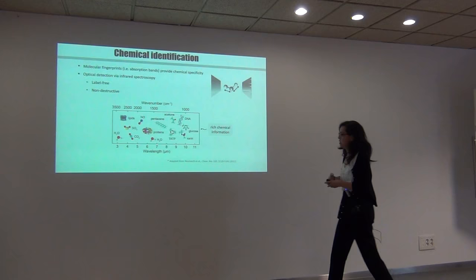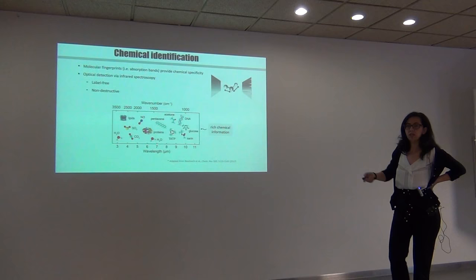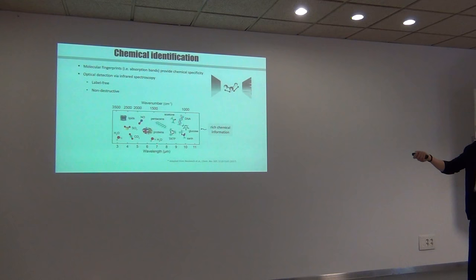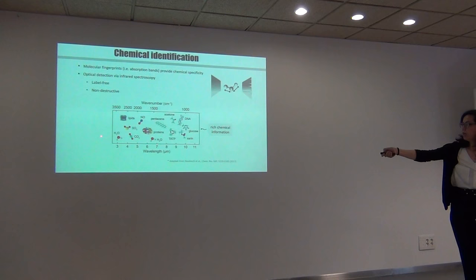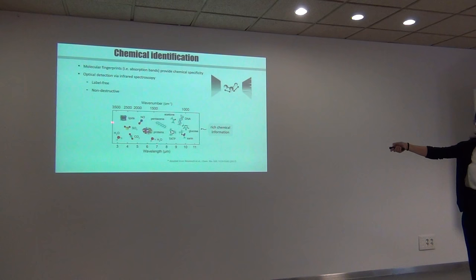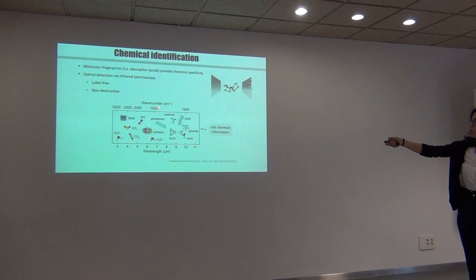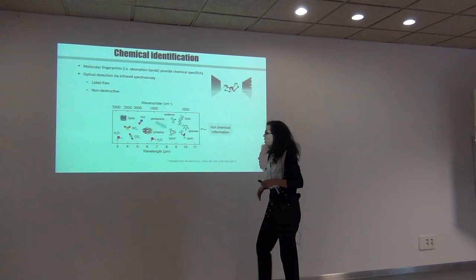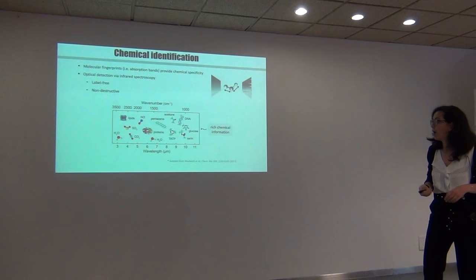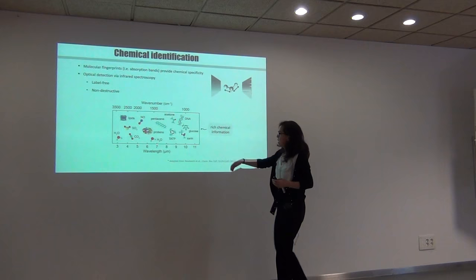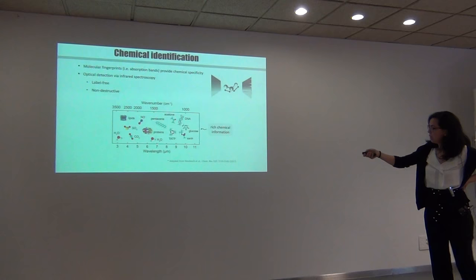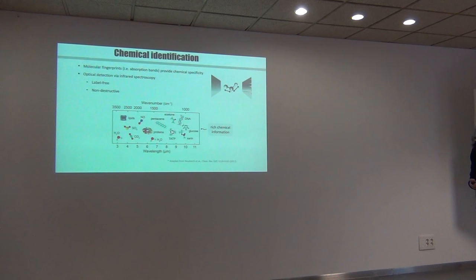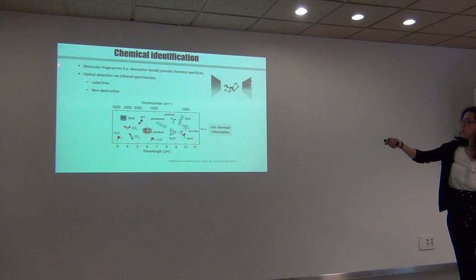In terms of wavelengths for photonics people, and wave numbers for spectroscopists, in the mid-IR range we look at direct absorption bands of molecules, mostly within the 3 to 10 micron range, corresponding to roughly 700 to 4,000 inverse wave numbers. The signatures of proteins happen to lie around 6 micron, DNA around 9 to 10 micron, and lipid has strong bands around 3 to 4 micron. There are also other chemicals of interest for explosive detection or environmental detection. So the mid-IR has rich chemical information for chemical identification, and the technique is label-free and non-destructive, which is what you want most of the time.